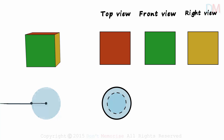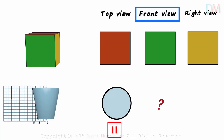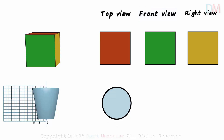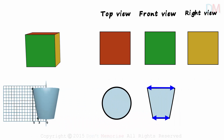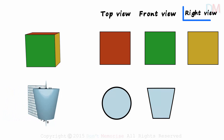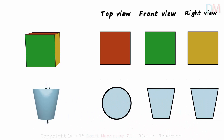And what about the front view? Pause the video and give it a thought. This is what we would see — a trapezium. Two sides parallel and two non-parallel. And the view from the right? Again, it would be a trapezium. No matter which side you look at it from, we will always see a trapezium.